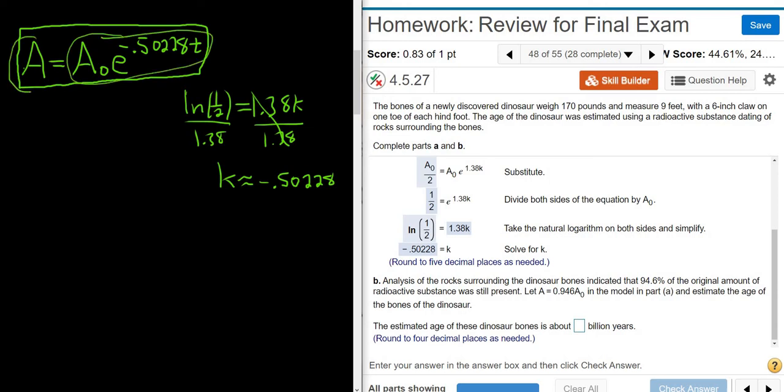So this right here is how much we have, this right-hand side. But that's also equal to the left-hand side. So this is how much we have after T years. We know we have 94.6% of the original amount. So what you do is you set A to 0.946 of the original amount. That's why you multiply. Of means multiply. I mean, they tell you to do it in the problem, but it's always better to understand. And then here's A sub 0, E to the negative 0.50228T.